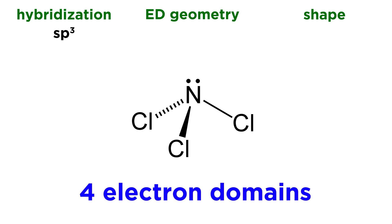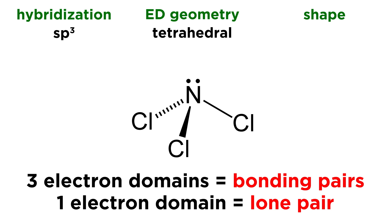We have s and three p's — that's four orbitals and four electron domains — sp3 hybridized. Anytime the central atom is sp3 hybridized, it will exhibit tetrahedral electron domain geometry. In terms of shape, three of the electron domains are bonding pairs to the three chlorine atoms, but that fourth electron domain is a lone pair. Because of that lone pair, the shape will not be tetrahedral — it will actually be trigonal pyramidal. So: sp3, tetrahedral electron domain geometry, and trigonal pyramidal shape.